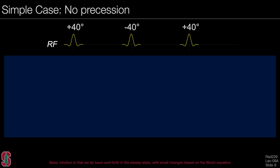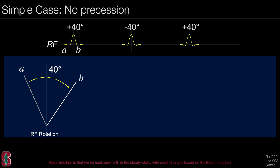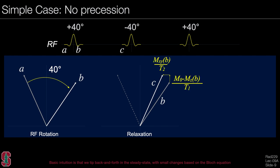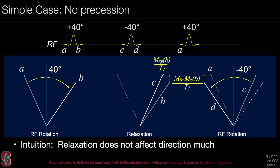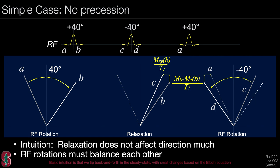Let's look at a simple case where there is no precession, tipping back and forth by 40 degrees. From point A to B, we rotate the magnetization. From point B to C, there is a small amount of longitudinal and transverse relaxation, as shown by the dashed yellow arrows. We can express the amount of relaxation in both directions using the Bloch equation. Then we rotate the magnetization back to point D, and the same relaxation happens. Because TR is very short, relaxation should not really affect the direction very much, and therefore the RF rotations must more or less balance each other.